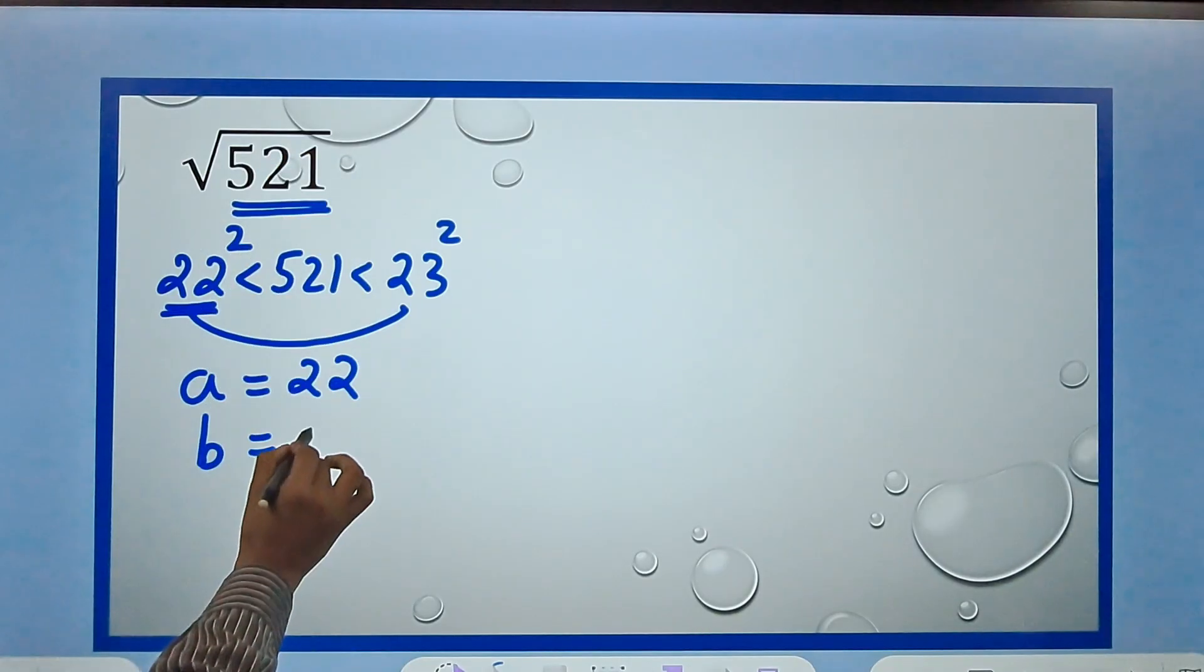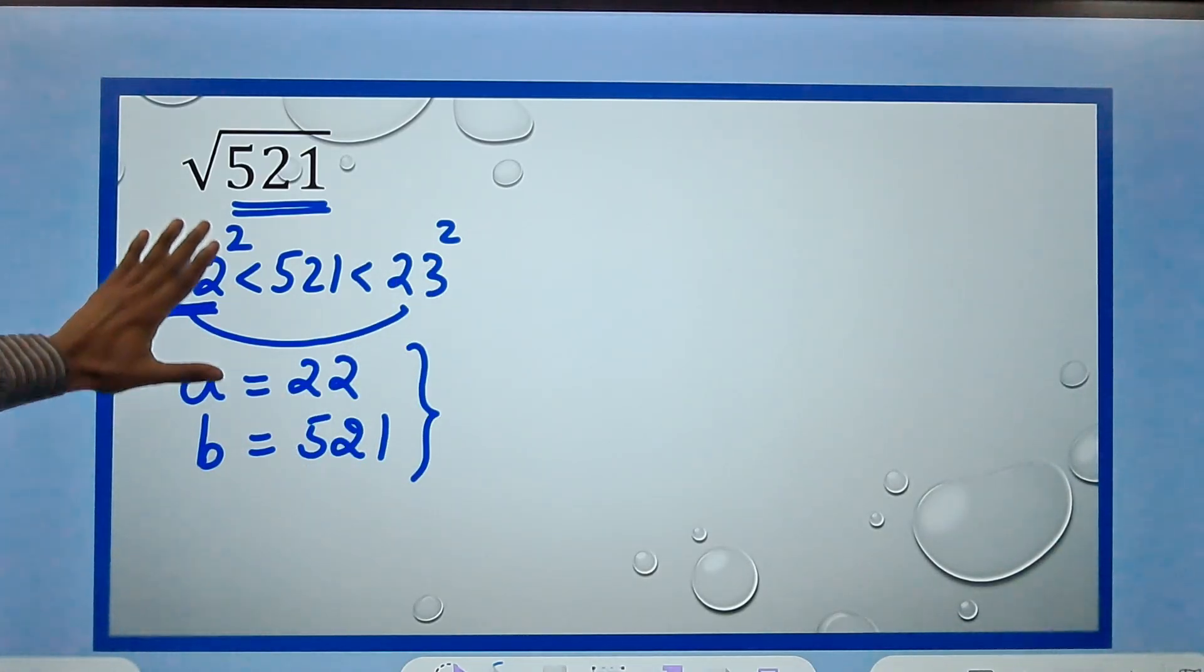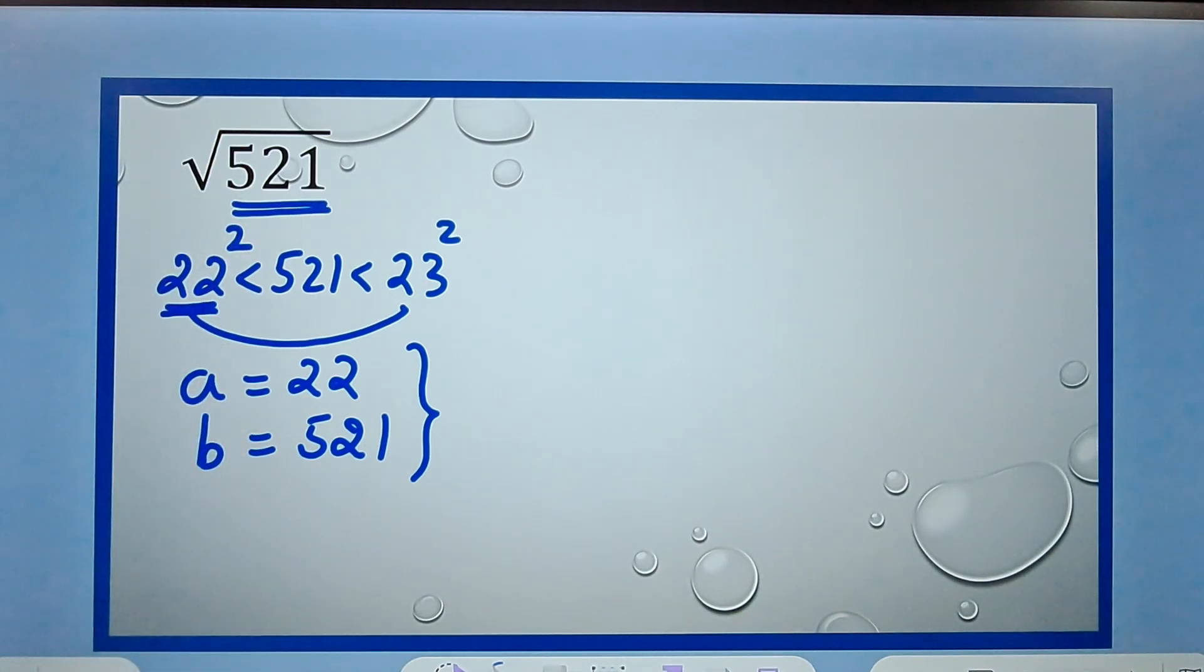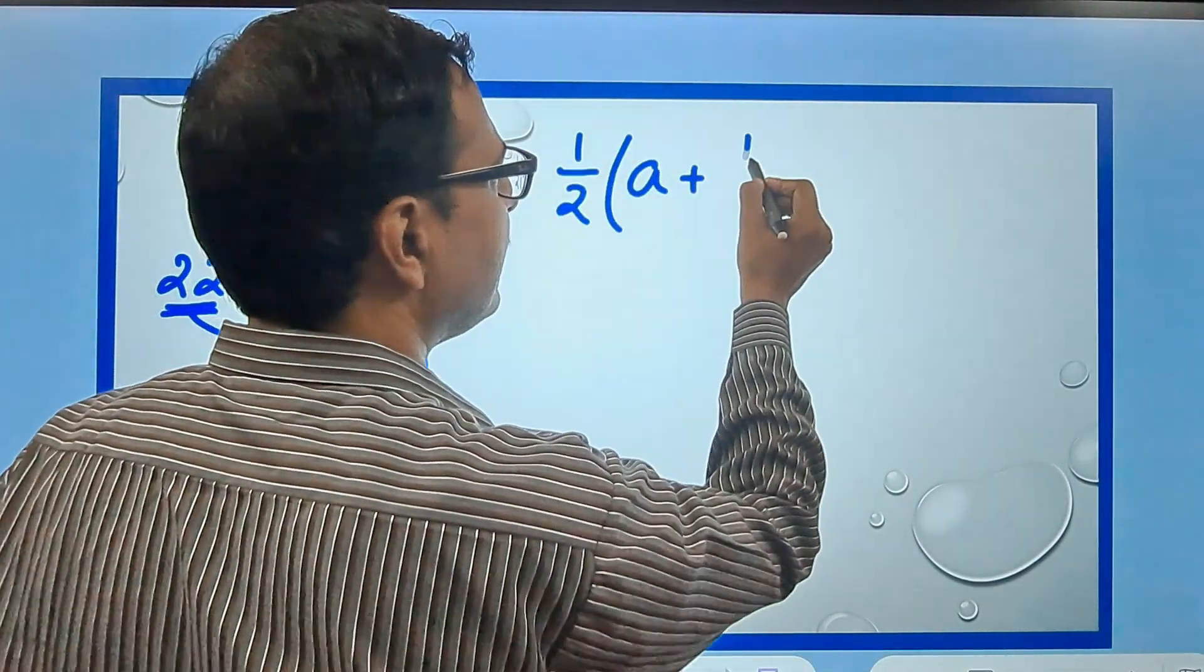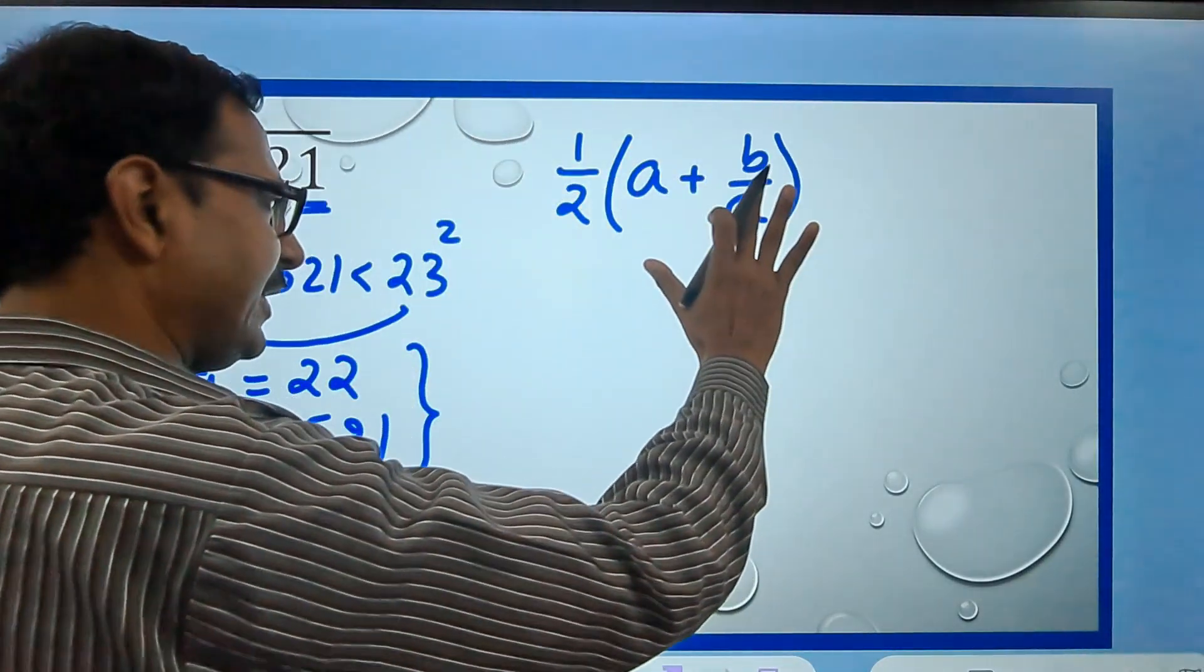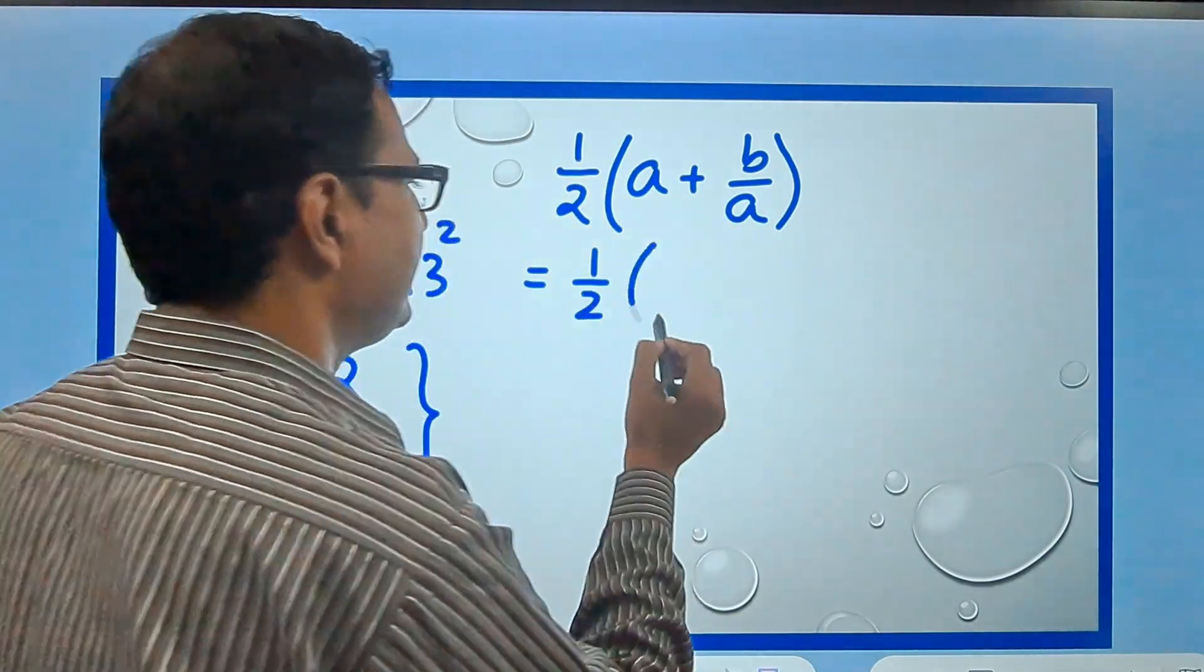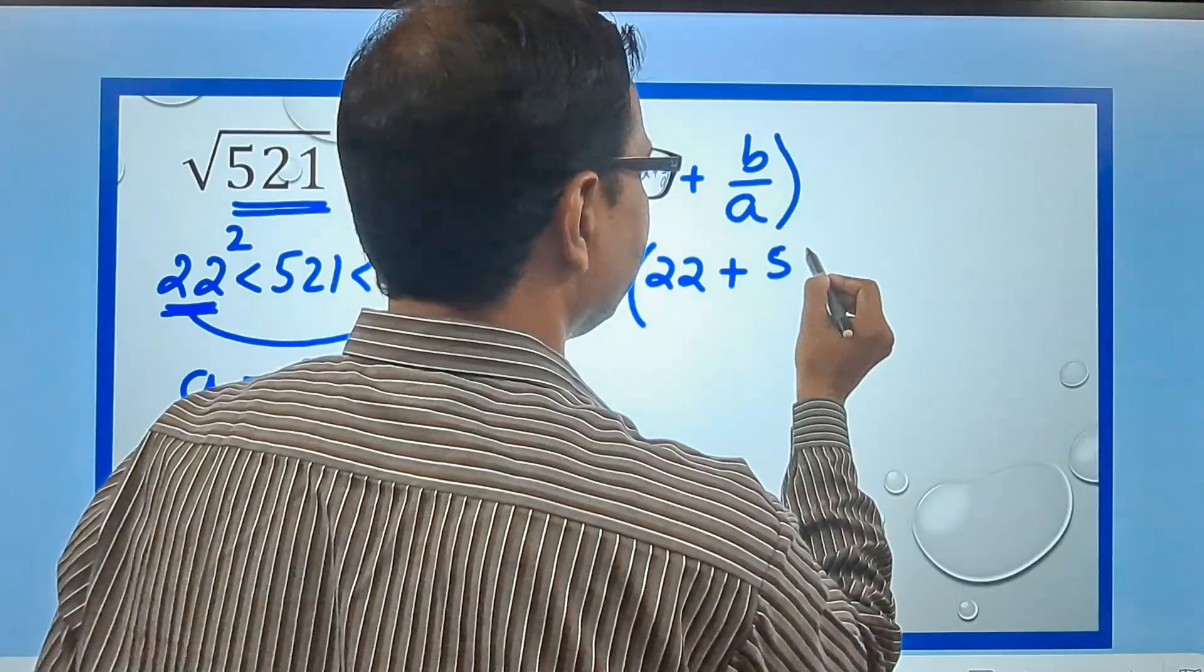These are mental math things so you don't have to write them. I am writing them just to tell you the steps for your ready reference. So a is 22 and b is 521. The number after decimal can be found out very easily if you can find out this factor: half of (a + b/a). So let's try and find out whether square root of 521 will be obtained by finding ½(a + b/a). In this case a is 22 and b is 521, so 22 plus 521 upon 22.